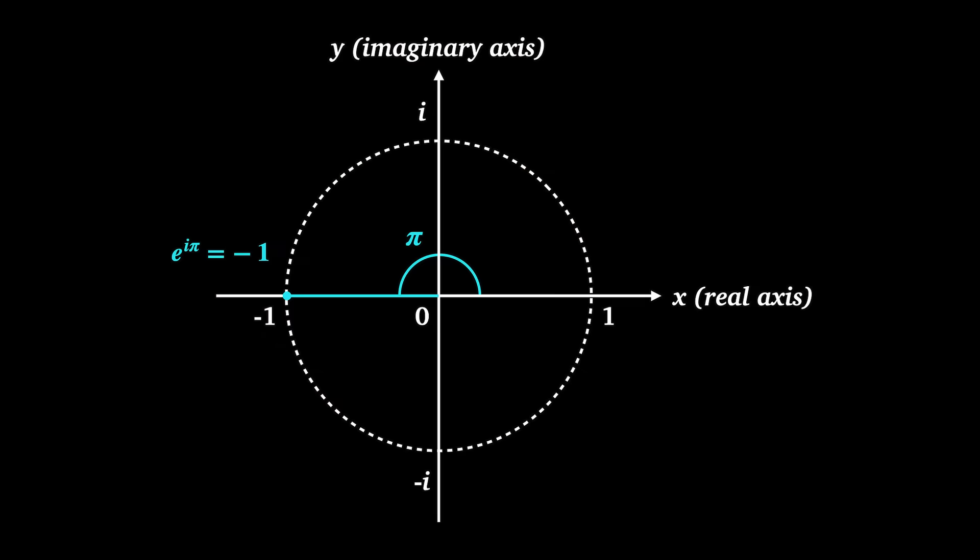So the exponential function represents growth and decay in the direction you already are. When you stick an i into the exponential, instead of motion in the same direction as your position, it becomes motion at a right angle — rotation. So e to the i-pi equals minus one tells you that if you rotate for a time pi, you end up in the opposite direction. It unifies geometry through dilation and exponential growth with dynamics through complexification and rotation by i, connecting these fields of mathematics.